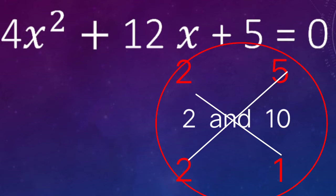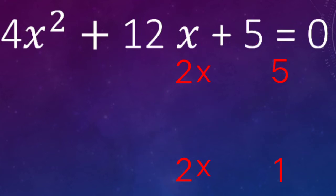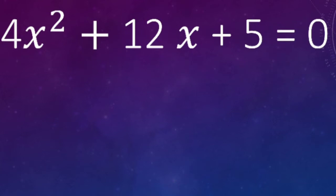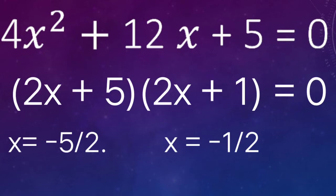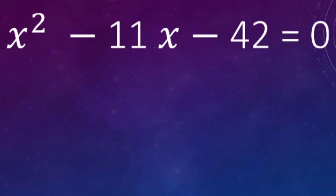So the second case is our option. Now just write x with both 2s, giving our answer: (2x + 5) and (2x + 1). You can verify by multiplying — the result is 4x² + 12x + 5 = 0. That is the solution of the first quadratic equation. Now let's see another example: x² − 11x − 42.